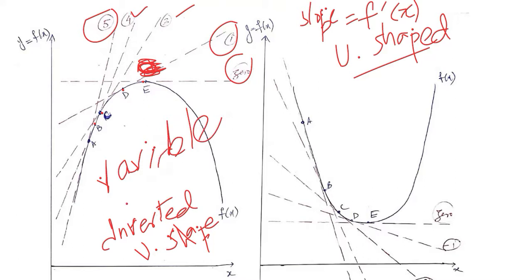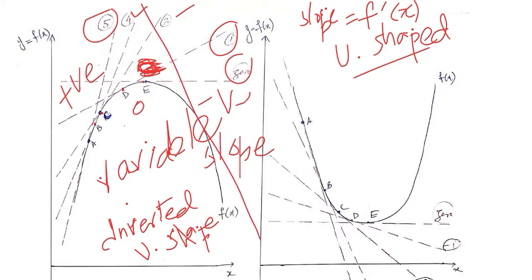This variable slope gives us multiple slopes, and these are a sign of a change in the slope. Initially the slope was positive, then it became 0, and then it becomes a negative slope beyond that point. The slope is decreasing as we move along the x-axis. The rate of change of slope is negative — the slope changes from positive to 0 and then to a negative value.